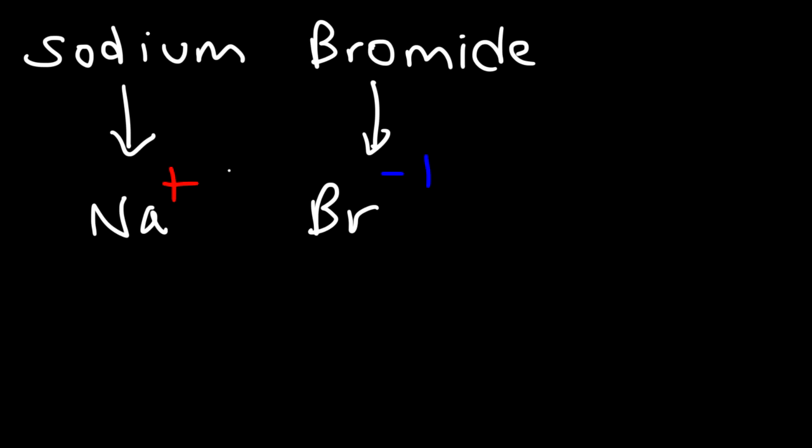Now, if the charges are the same in magnitude, even though they're opposite in sign, so like this is plus 1, this is minus 1, if the charges are the same, these ions will combine in a 1 to 1 ratio. So you can simply write them together as NaBr. That's the answer for this example.